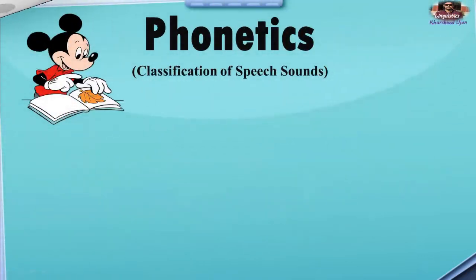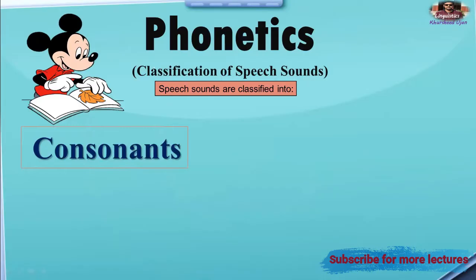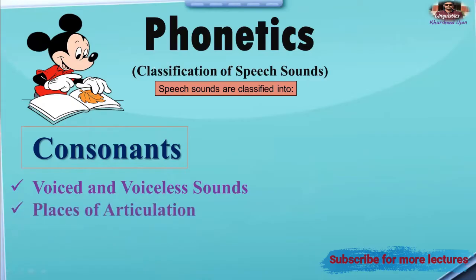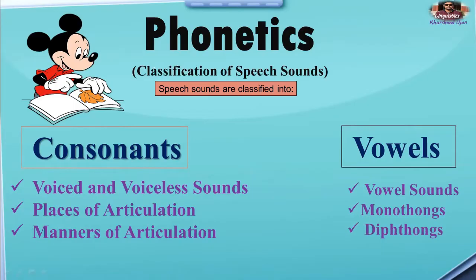Here is what we are going to learn today. Speech sounds are classified into consonant sounds, and within consonant sounds we study voiced and voiceless sounds. There are also places of articulation and manners of articulation. On the other hand, sounds are classified into vowel sounds, and when we study vowel sounds we study monothongs and diphthongs.